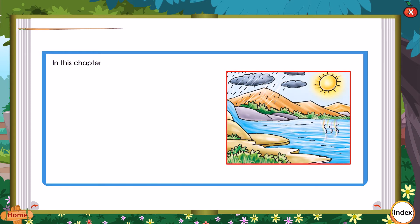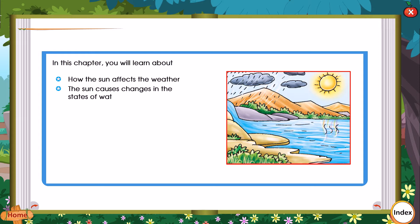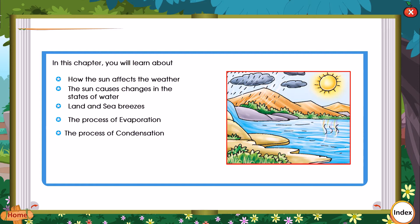In this chapter you will learn about: how the sun affects the weather; the sun causes changes in the states of water; land and sea breezes; the process of evaporation; the process of condensation; the water cycle; purification of water; and underground water.